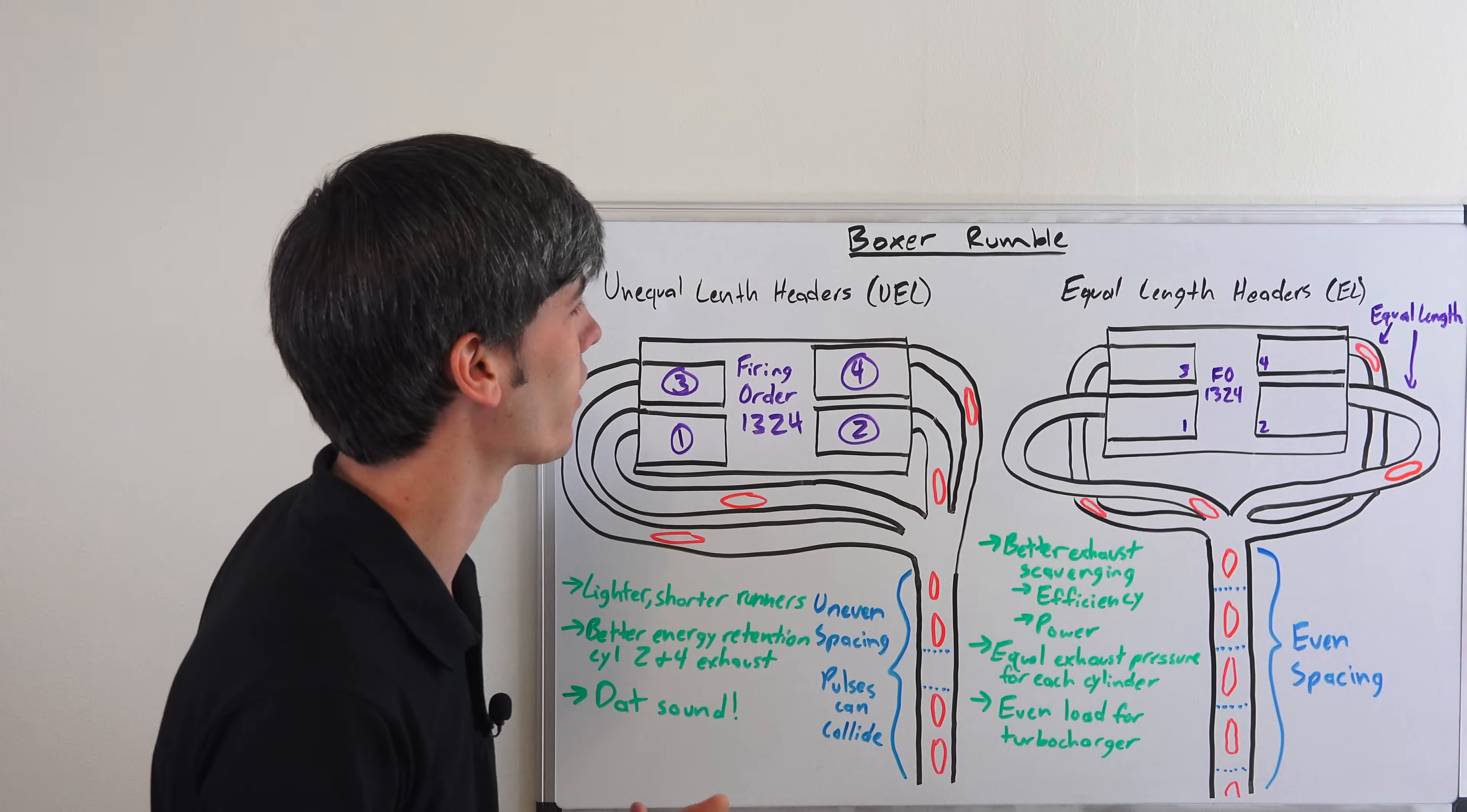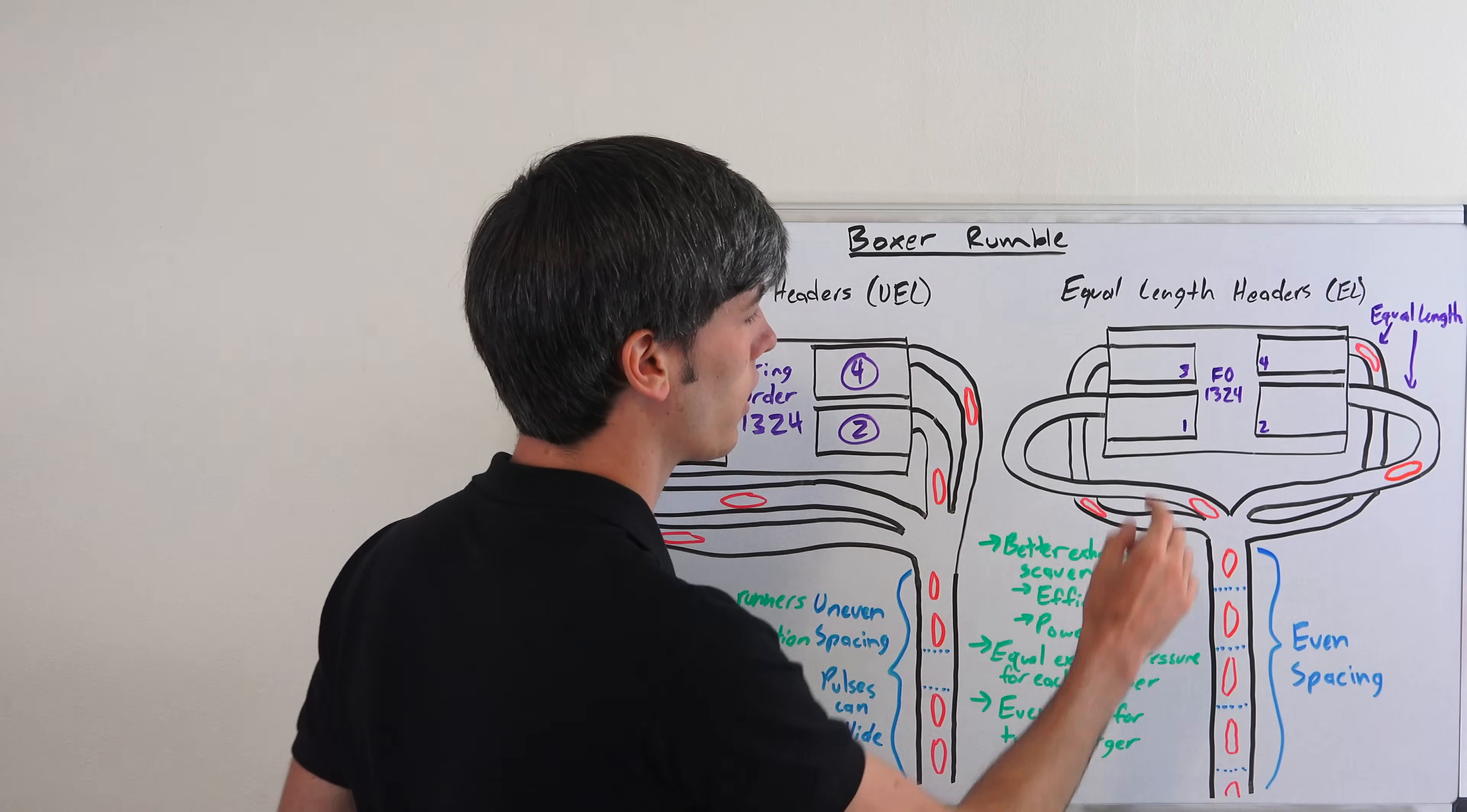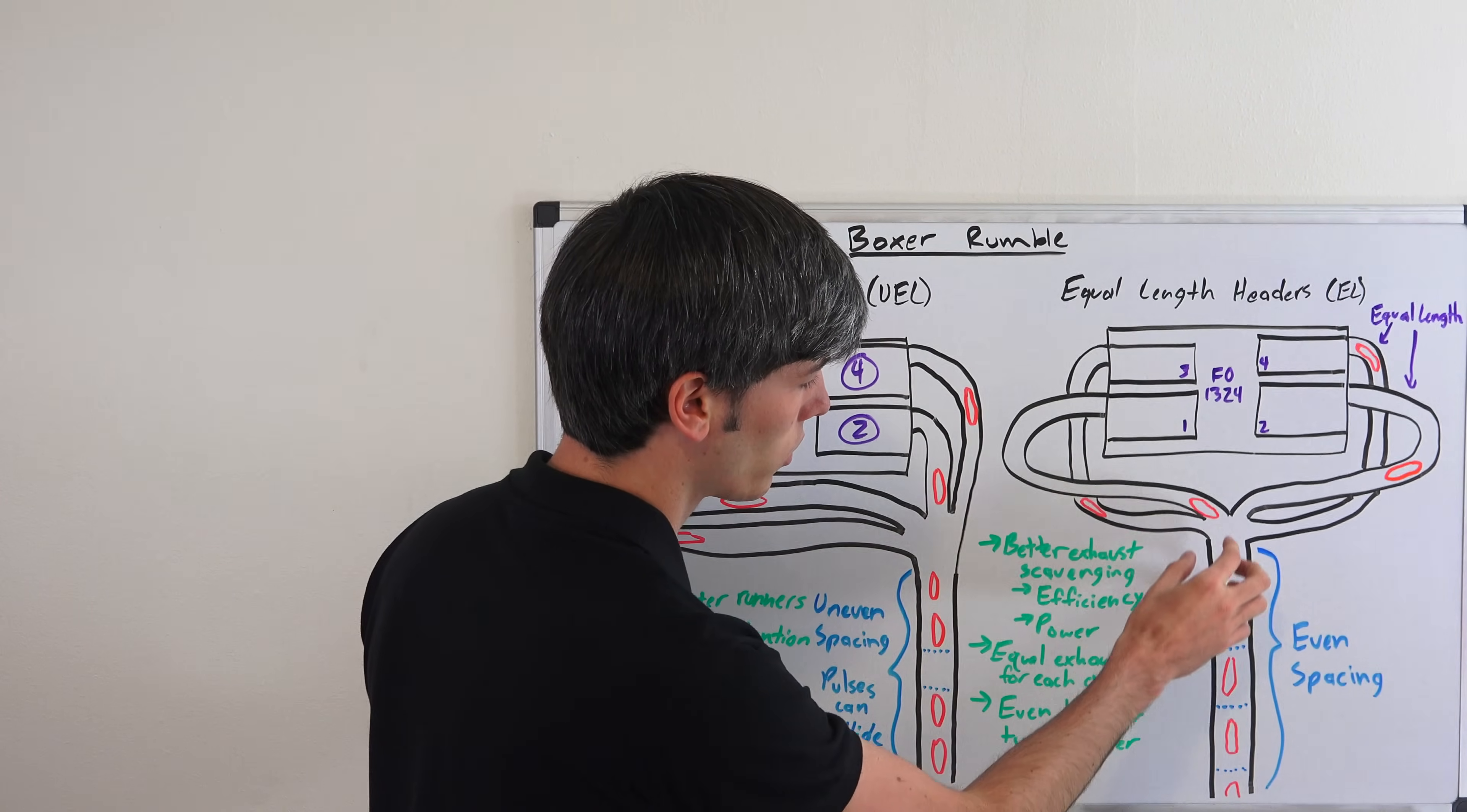With equal length headers, basically what happens is you design the header so that all four pipes are the exact same distance. So the exhaust pulses travel the exact same distance before they meet up into a single pipe heading towards the rear. All of these are the same length.